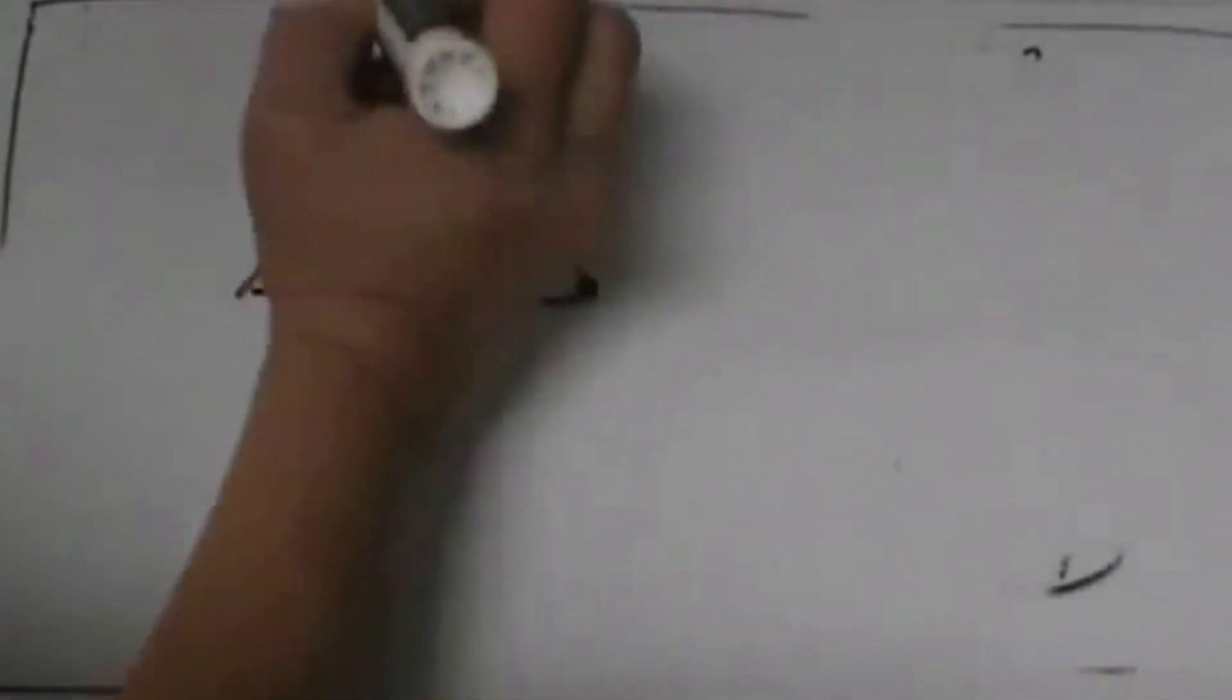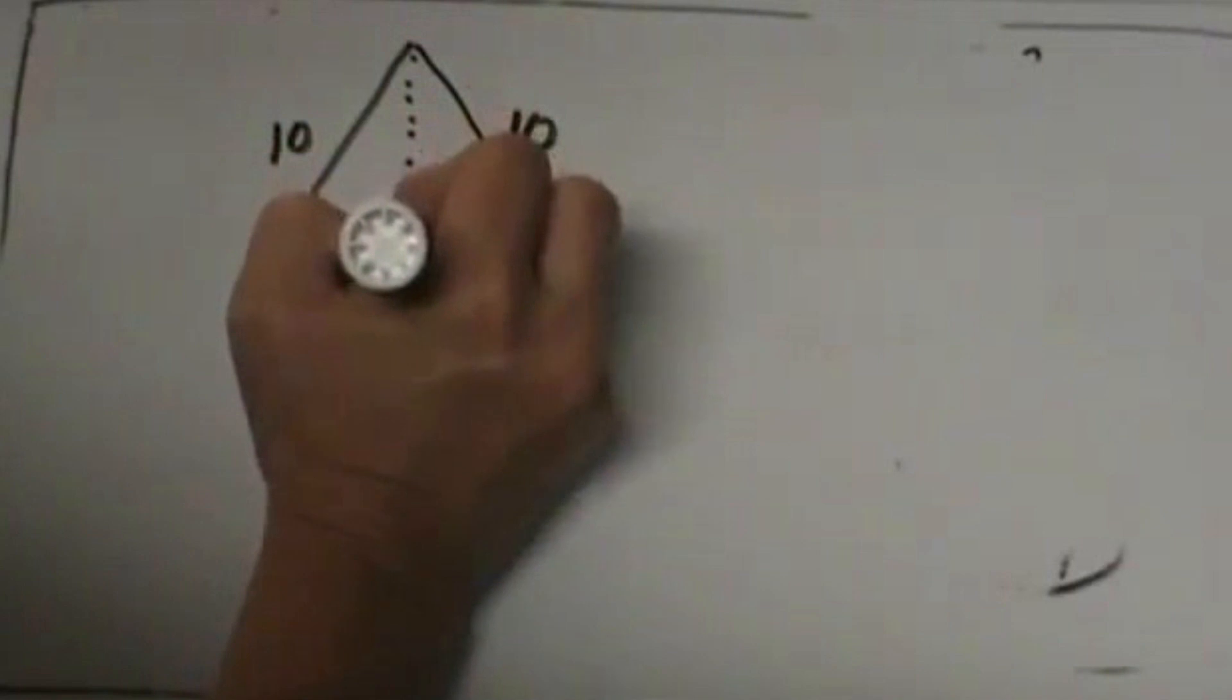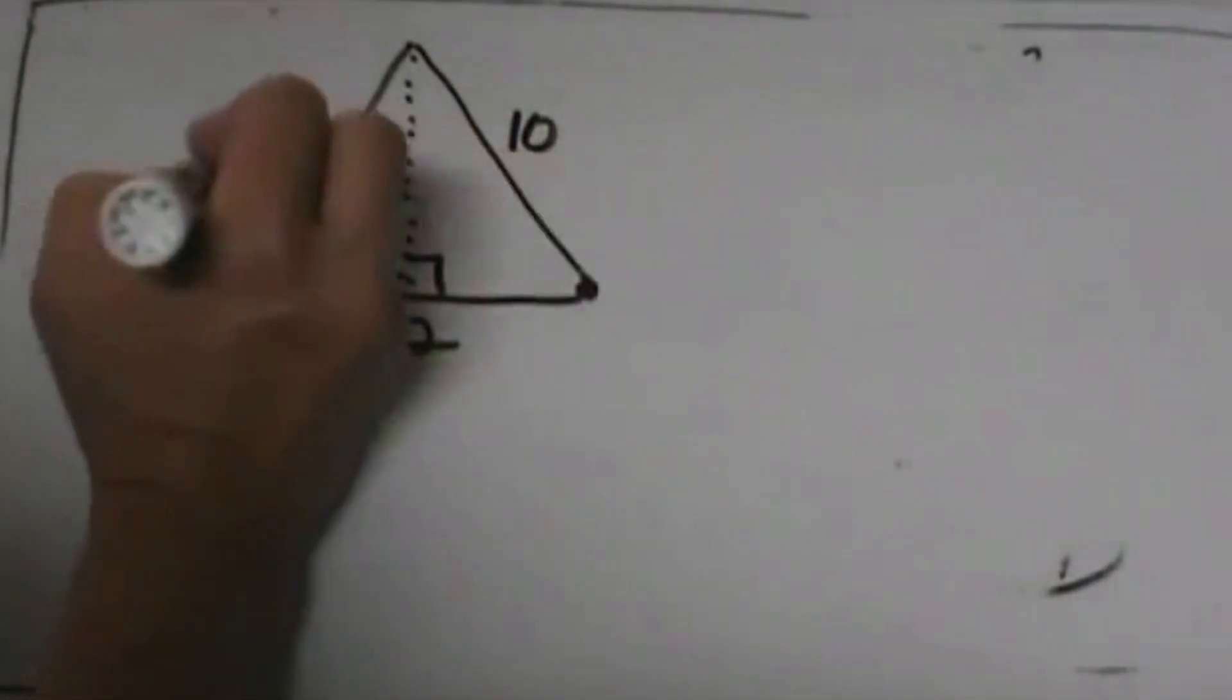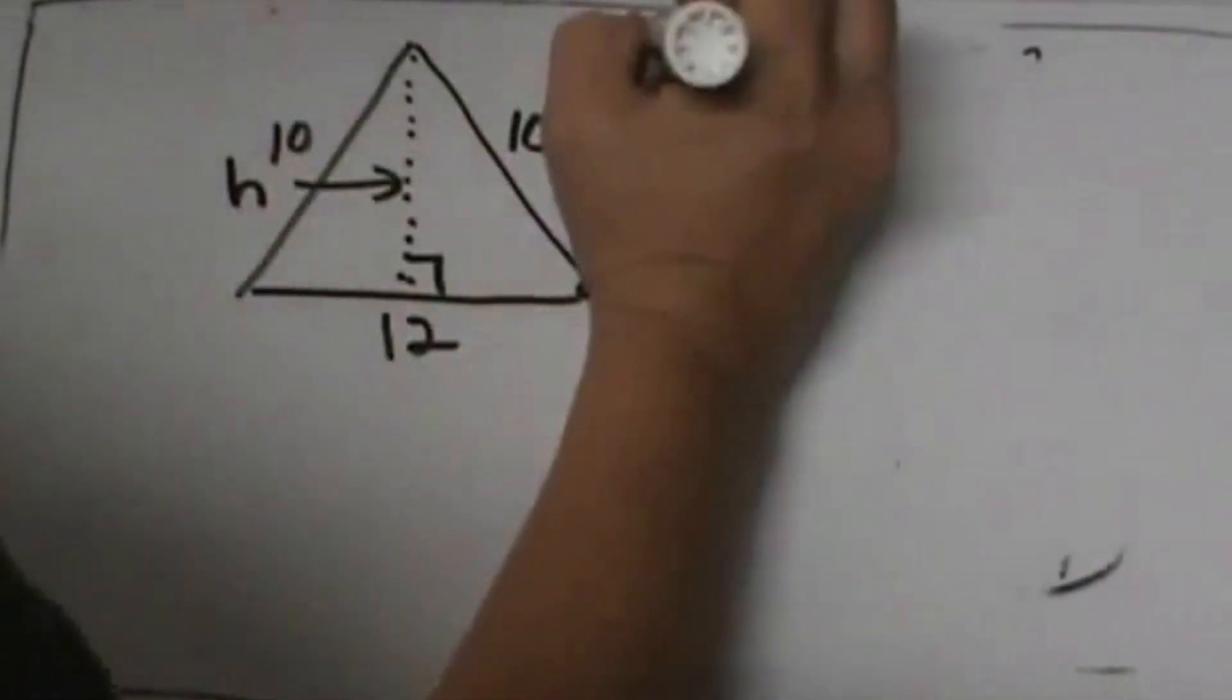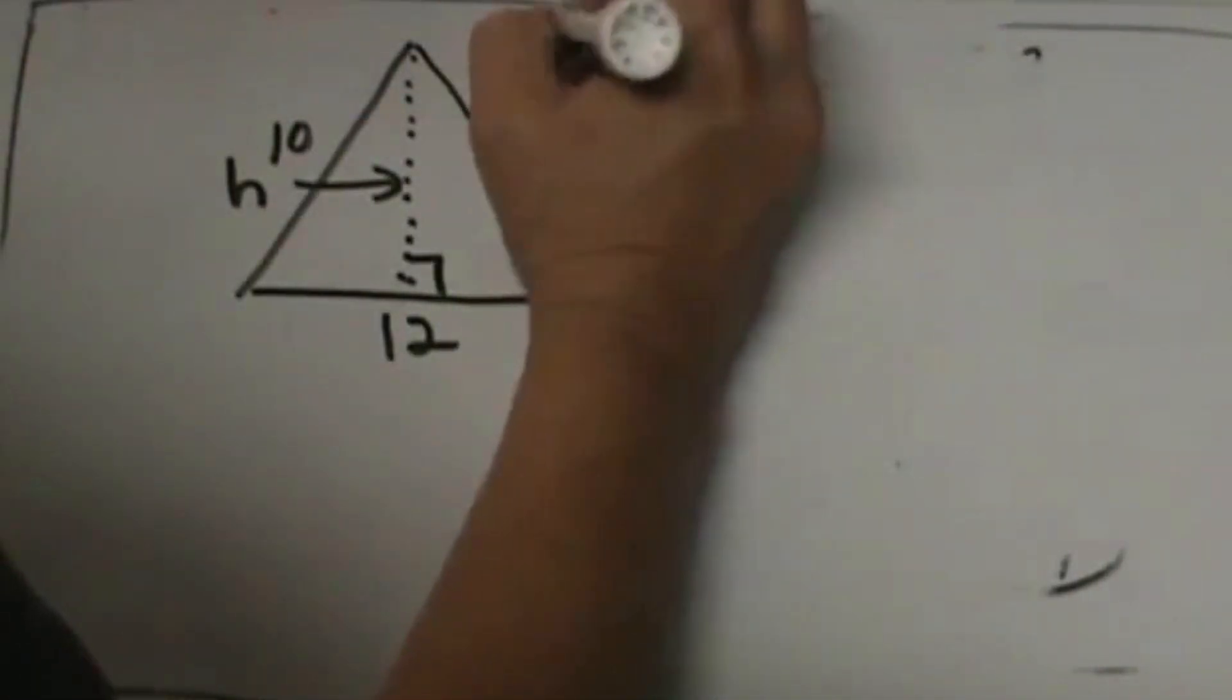This is where the altitude comes in. We're going to draw an altitude down because that is our height. Remember we have to do one half the base times the height to find the area.